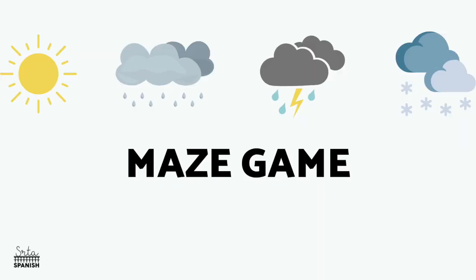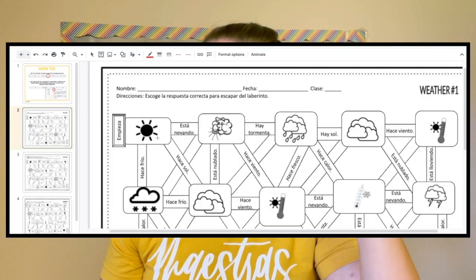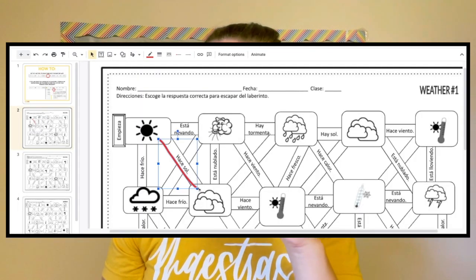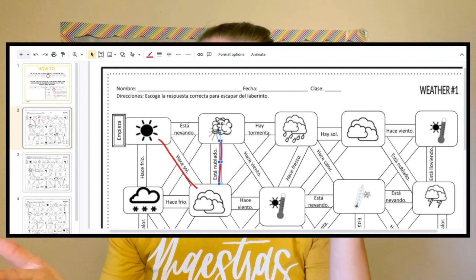The next weather-related activity is a maze game, or labirinto, as I call them with my students. I have a blog post on 10 different ways you can use maze games in your classes. I personally like to use them as fast finishers or as a quick warm-up. For the weather version, students look at a small symbol and choose the correct word or phrase in Spanish that matches it, continuing until they get through the maze. You can do this in pairs, small groups, as a timed race, homework, a warm-up, a quiz, or projected on a screen for the whole class.